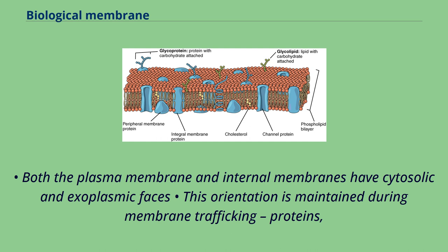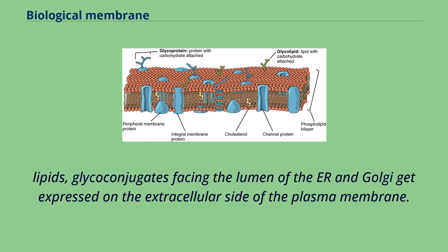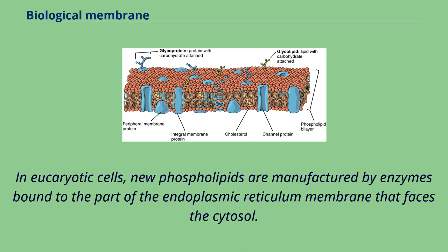Both the plasma membrane and internal membranes have cytosolic and exoplasmic faces. This orientation is maintained during membrane trafficking. Proteins, lipids, and glycoconjugates facing the lumen of the ER and Golgi get expressed on the extracellular side of the plasma membrane in eukaryotic cells. New phospholipids are manufactured by enzymes bound to the part of the endoplasmic reticulum membrane that faces the cytosol.